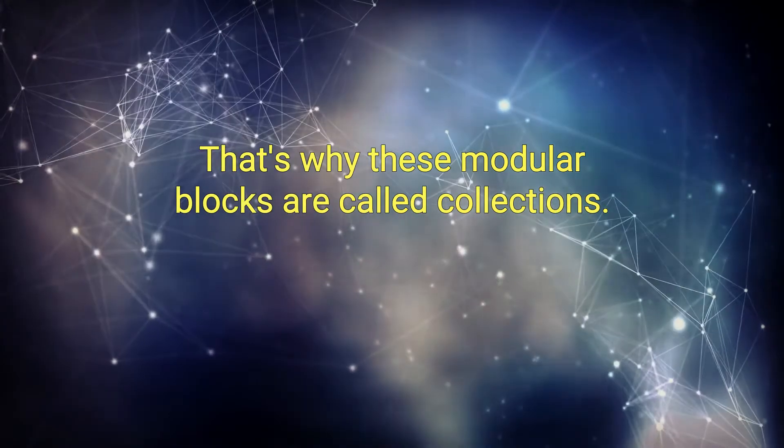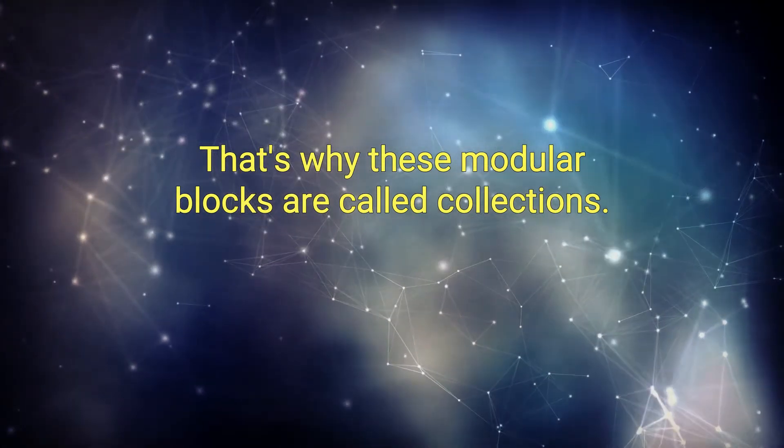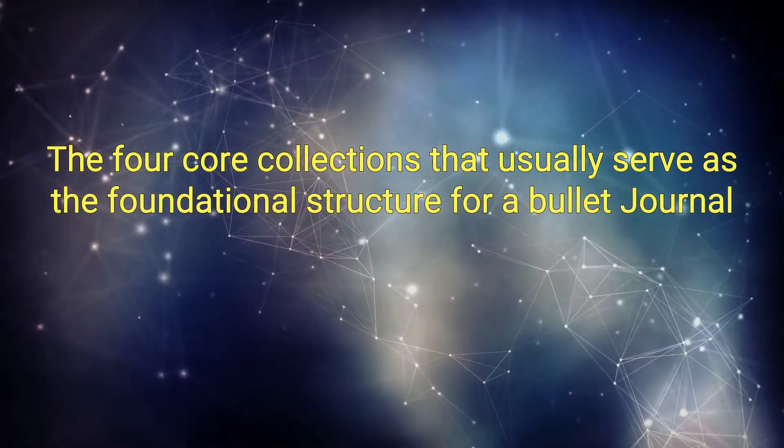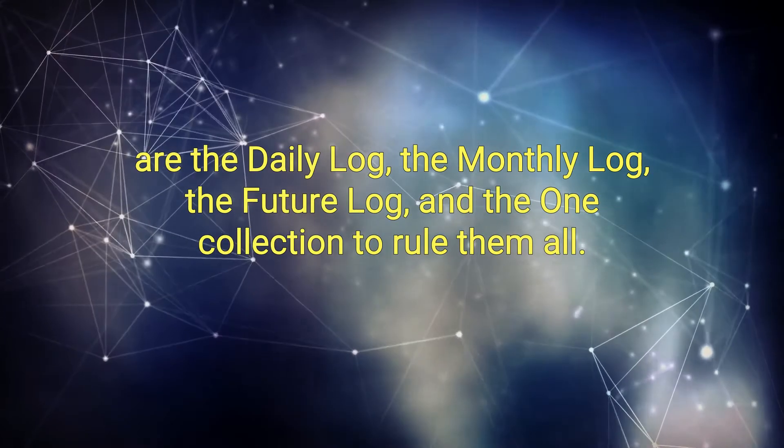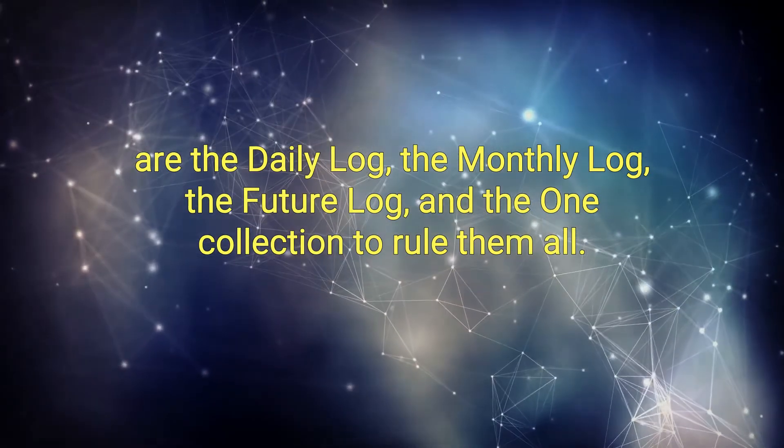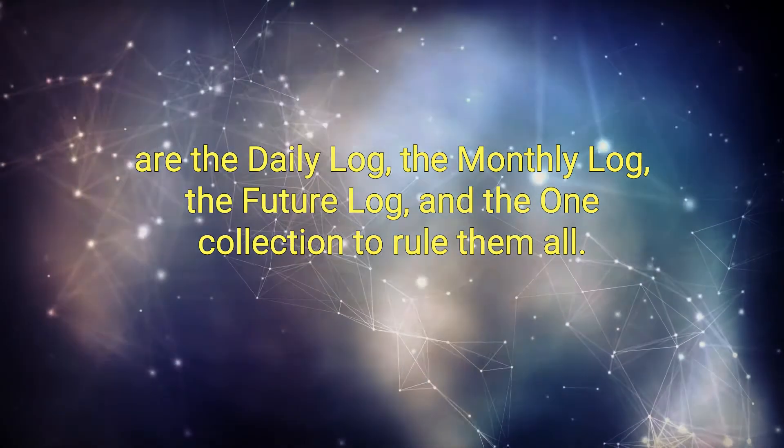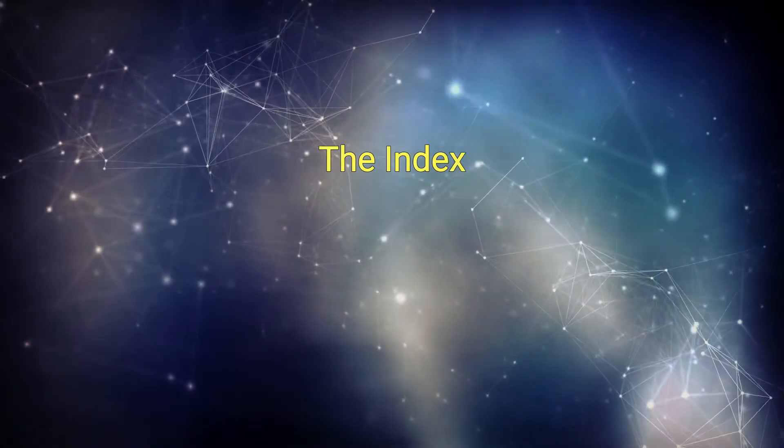That's why these modular blocks are called collections. The four core collections that usually serve as the foundational structure for a bullet journal are the daily log, the monthly log, the future log, and the one collection to rule them all: the index.